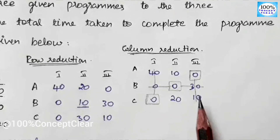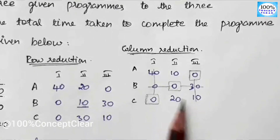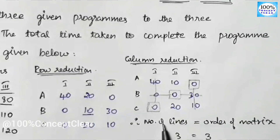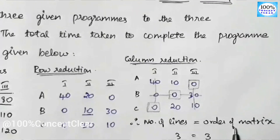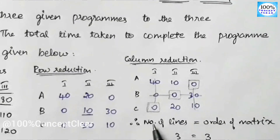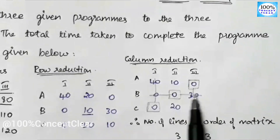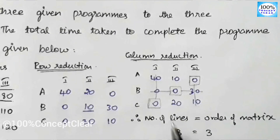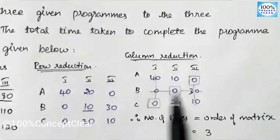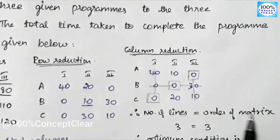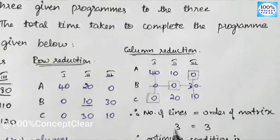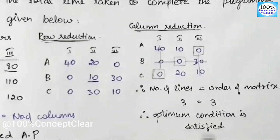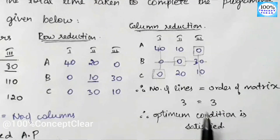Now we check the optimum condition. The condition is: the number of lines equals the order of the matrix. We drew 3 lines, and the order of the matrix is 3×3, meaning 3 rows and 3 columns — so the order of the matrix is 3. These two are equal, so we satisfy the optimum condition.